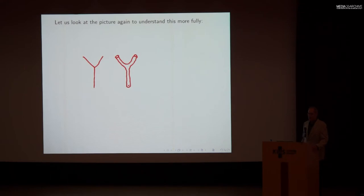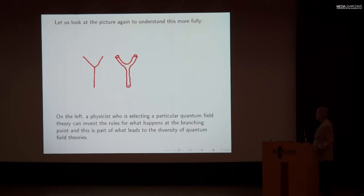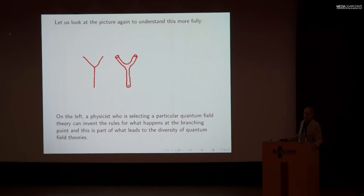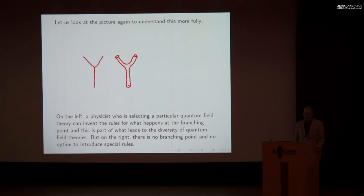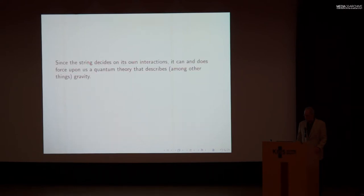On the left, a physicist selecting a particular quantum field theory can invent the rules for what happens at the branching point — for example, can the particle coming in be an electron, and can the particle going out be a photon or a muon? So when you're inventing the quantum field theory, you say which particles are allowed to participate in this process. That's part of what leads to the diversity of quantum field theories. On the right, there's no branching point and no option to introduce special rules. Since the string decides on its own interactions, it can and does force upon us a quantum theory that describes, among other things, gravity.